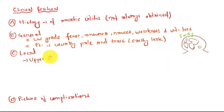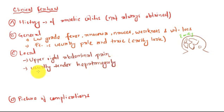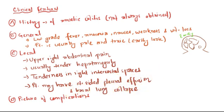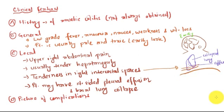Talking about the local picture, there is upper right abdominal pain, usually tender hepatomegaly, tenderness in right intercostal spaces. Patient may have right-sided pleural effusion and basal lung collapse. Here we have a diagrammatic representation. This is effusion and the collapsed lung. This you can see here the tenderness in right intercostal spaces and tender hepatomegaly. What we can see from this diagram is the patient has earthy look with right-sided pleural effusion and collapsed lung, tenderness in the right intercostal space, and tender hepatomegaly.